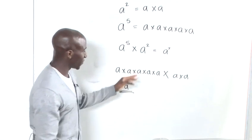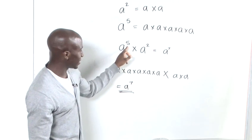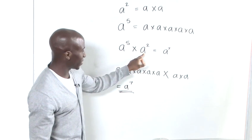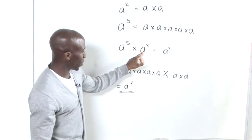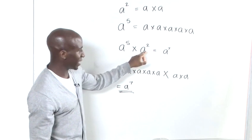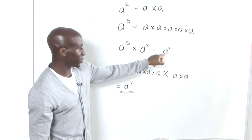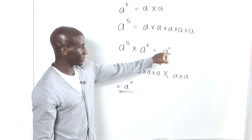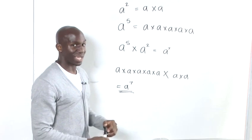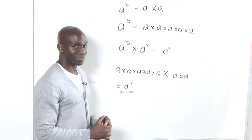And that's proof that a to the 5, when multiplied by a to the 2, equals a to the 7. And that's how to multiply exponents.